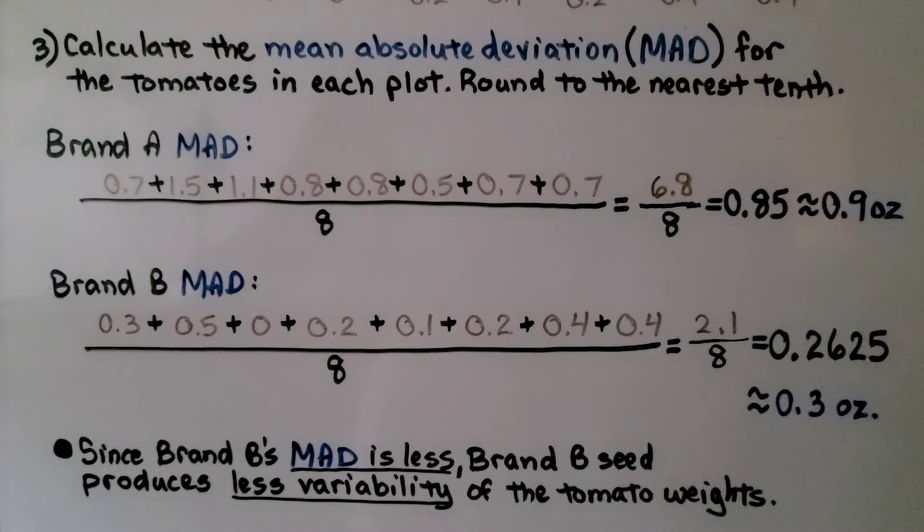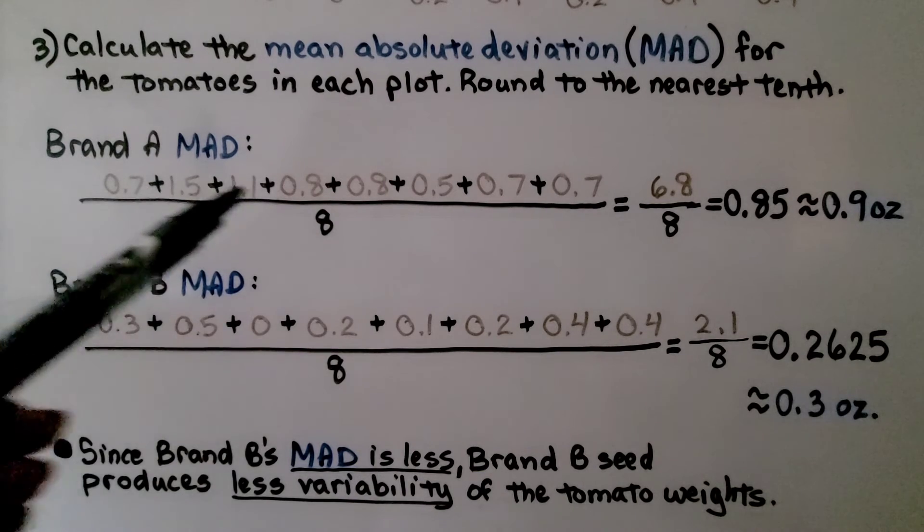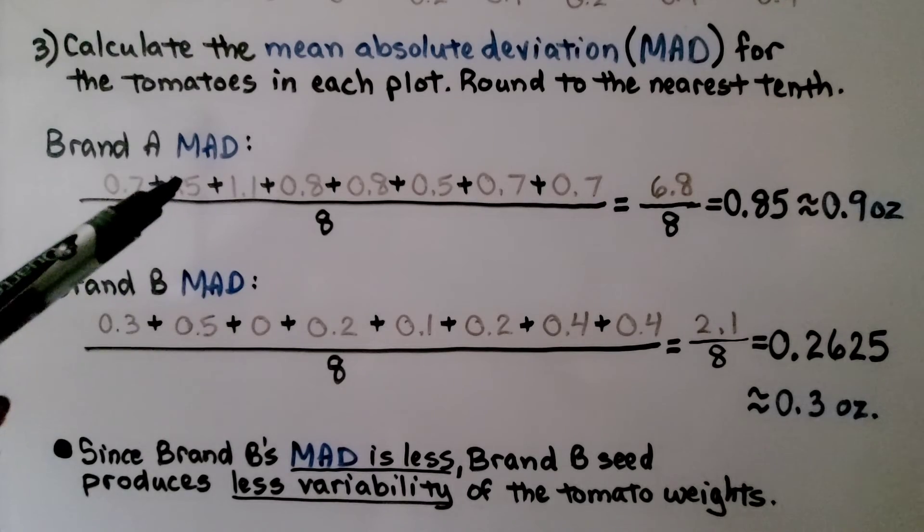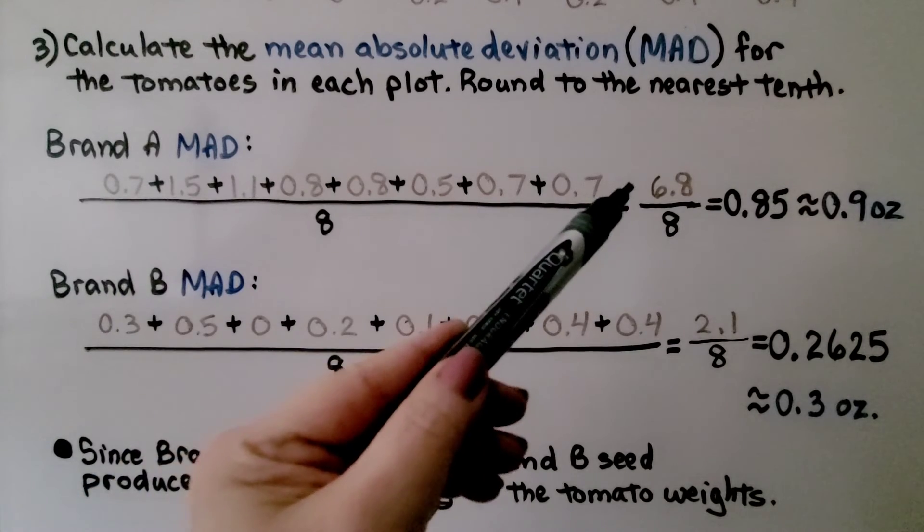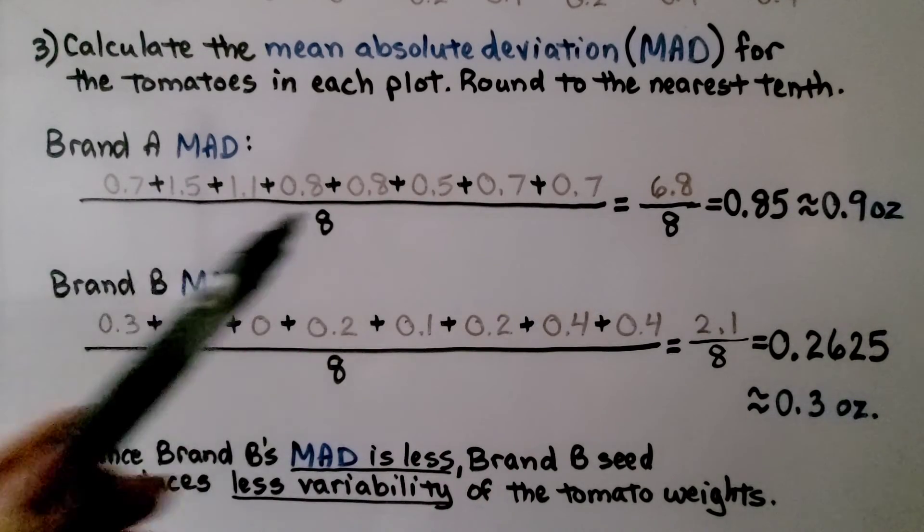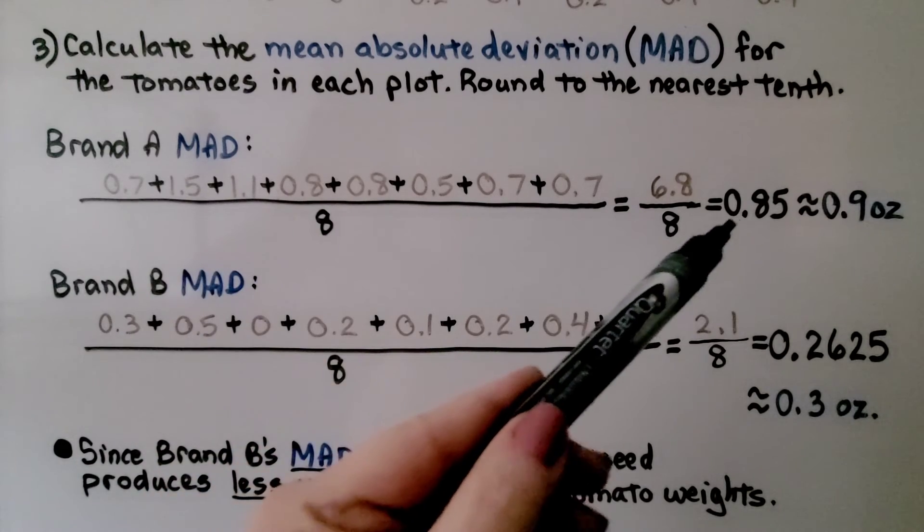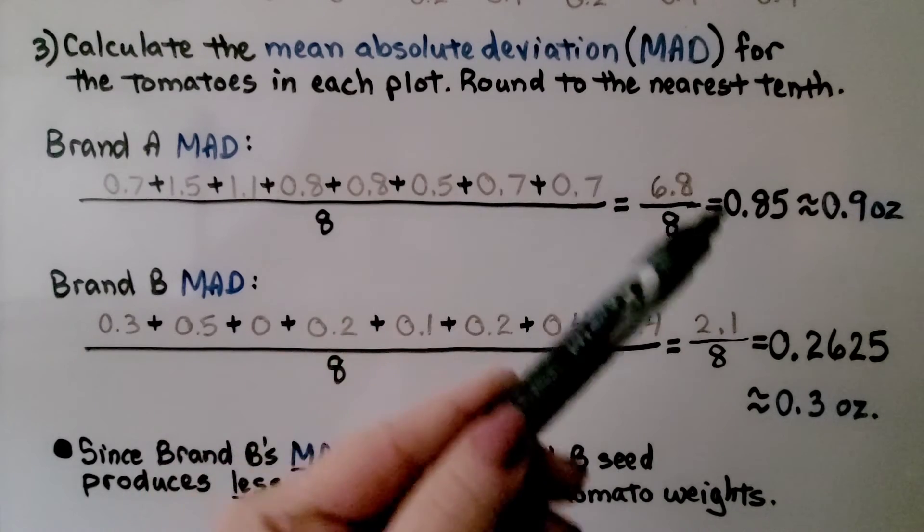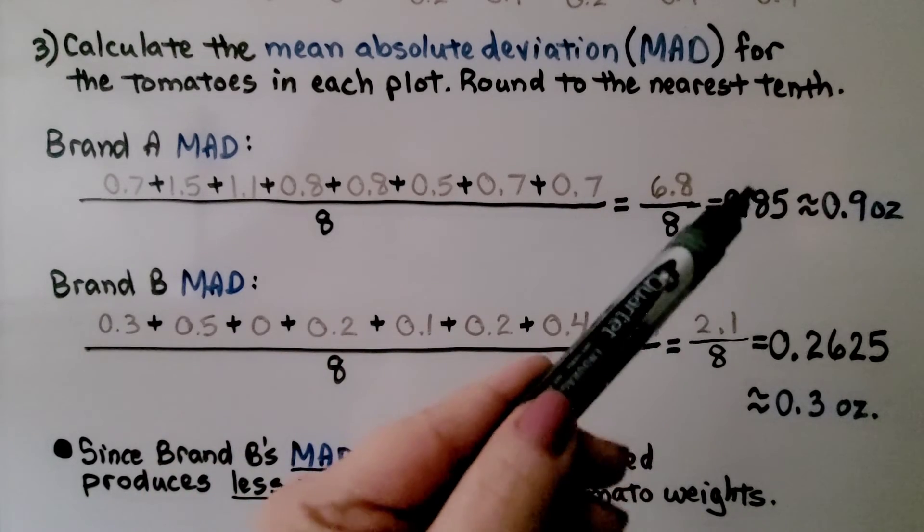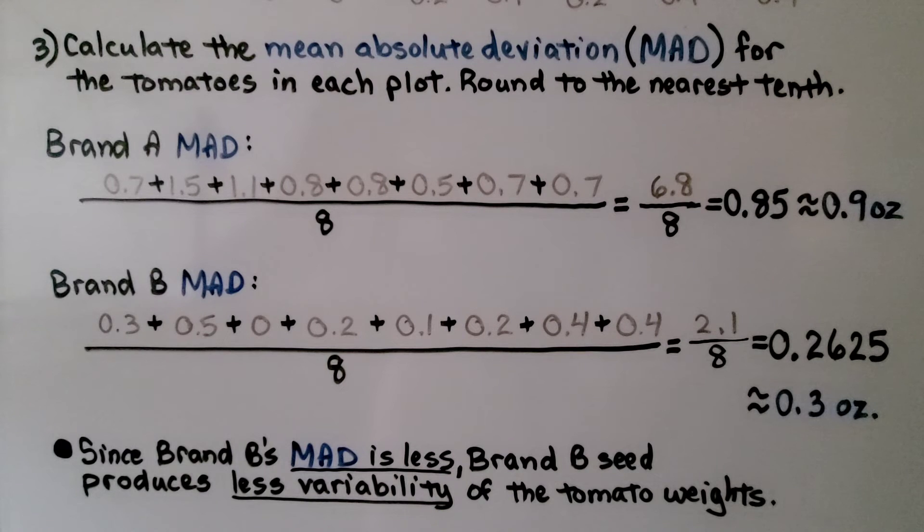Now that we have the distances from the mean written to our table, we can calculate the mean absolute deviation, the MAD, for the tomatoes in each plot. We're going to round to the nearest tenth. So for brand A, these were all the distances from the mean. We add them and get 6 and 8 tenths. We know there were eight of them. So we're going to divide that by eight and we're going to get 85 hundredths. But it wants us to round it to the nearest tenth. So this five is going to tell the eight to go up to nine. So we have about 9 tenths of an ounce.